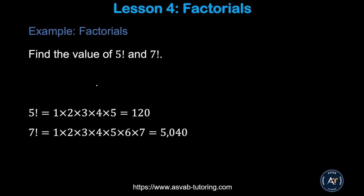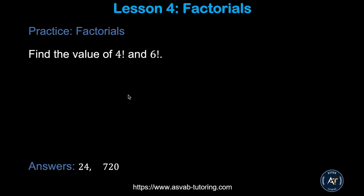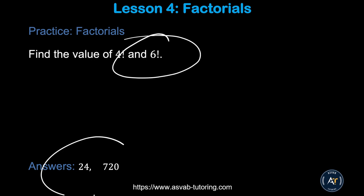Now we'll learn how to find a factorial. Factorial 5 means 5 times 4 times 3 times 2 times 1. Factorial 7 equals 1 times 2 times 3 times 4 times 5 times 6 times 7, which is 5,040. Factorial 5 is 120. Try the two practice problems by yourself and make sure you get the correct answers.